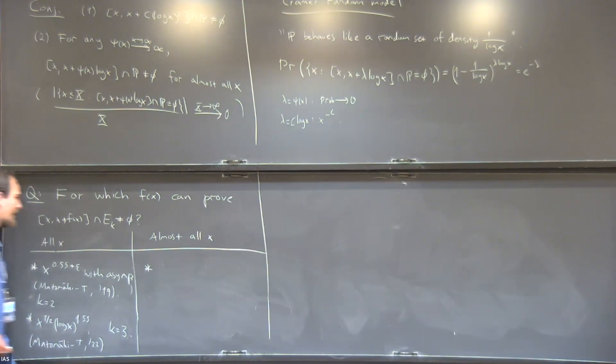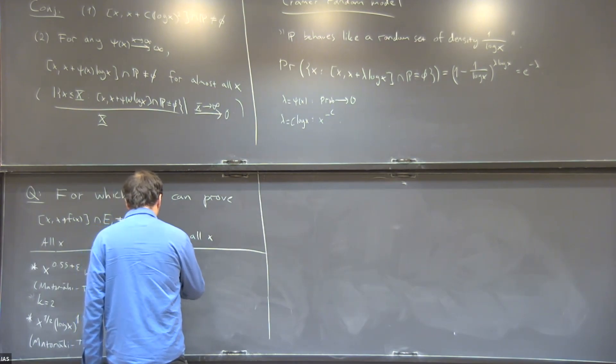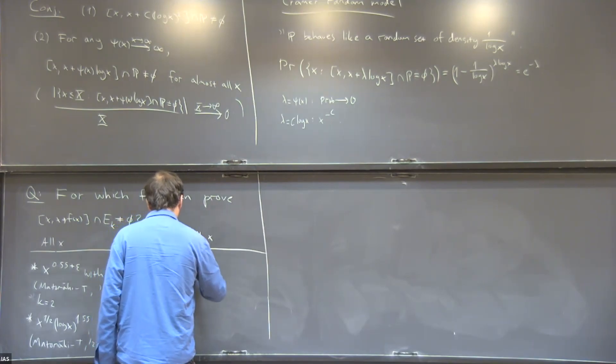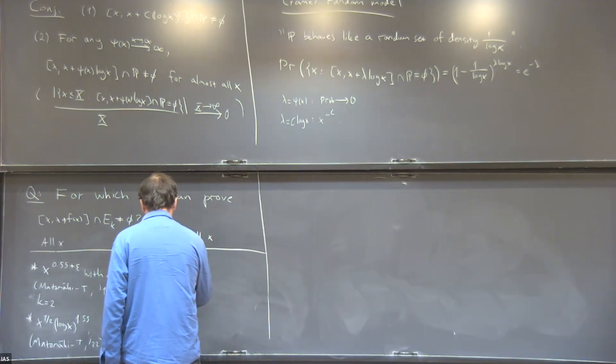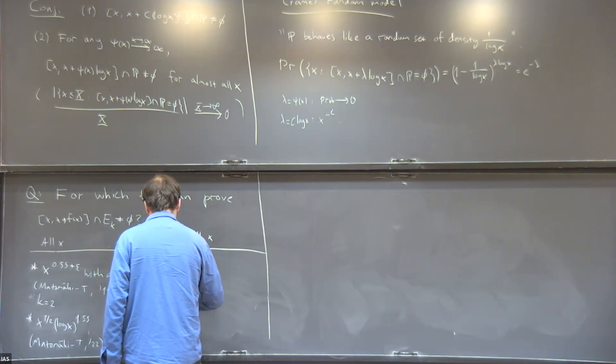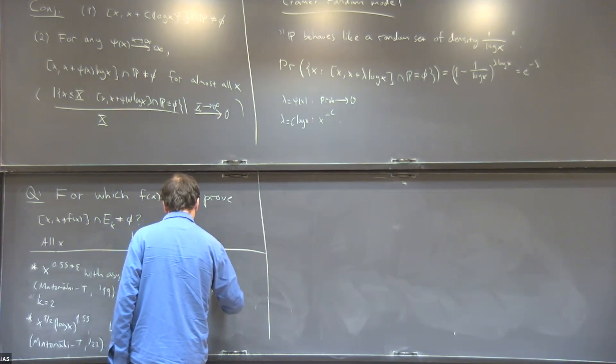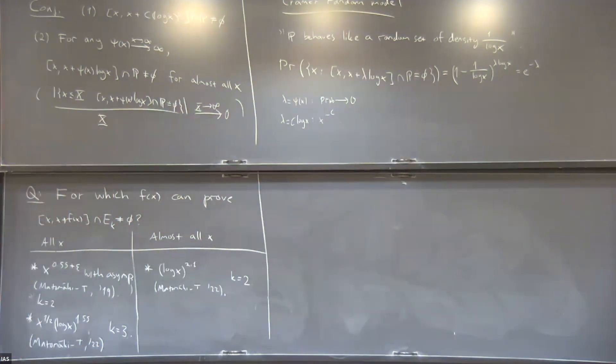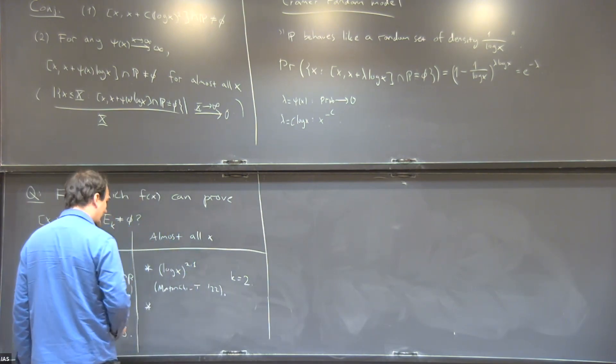What about almost all X? Now these results are still very far from log squared of X, which was the conjecture. But for almost all X we can do log X to the power 2.1 with semi-primes. So it's finally getting to the logarithmic regime.